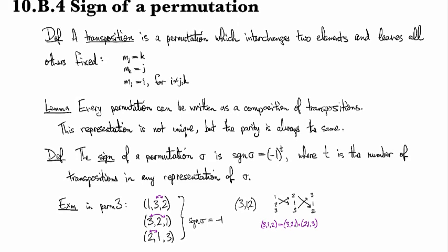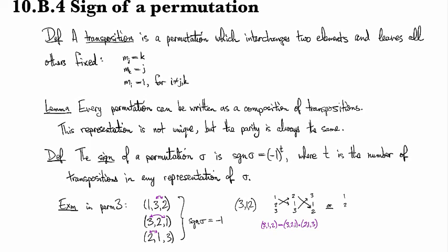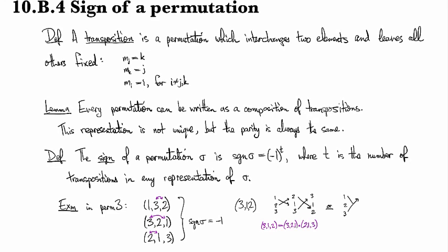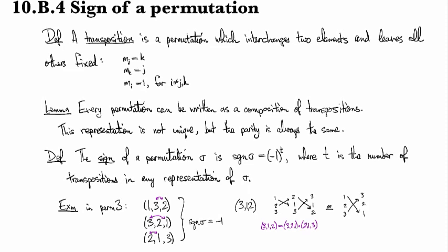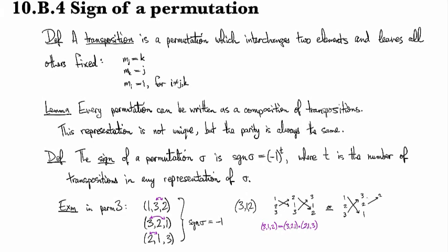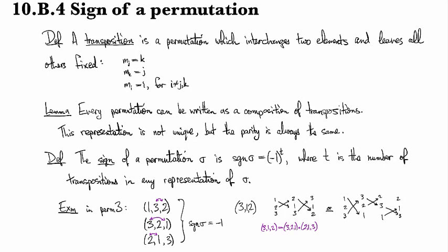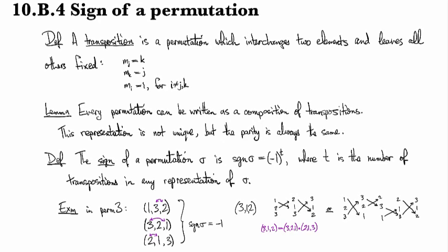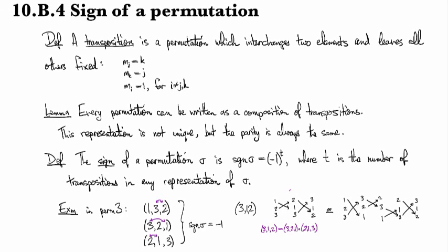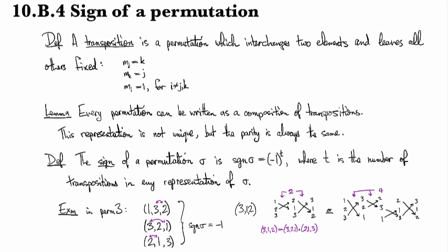Alternatively, starting from 1, 2, 3: I could swap the first and last, then swap the first two, then swap the last two, then swap the first and last again — and I get 3, 1, 2. In this first approach it took 2 transpositions, and in this other one it took 4. But it's a theorem that you'll never be able to do it in exactly 3 or exactly 5, or exactly 1.